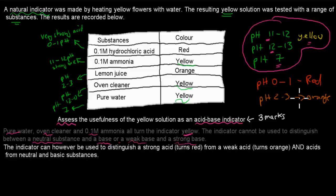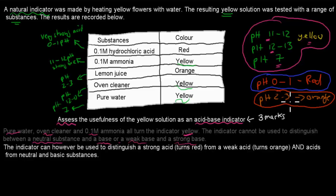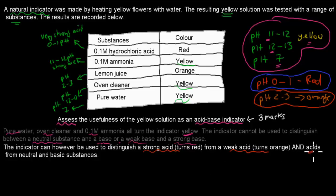The second part concerns the acids. The indicator can, however, be used to distinguish between a strong acid — which turns red — and a weak acid — which turns orange. It can also be used to distinguish acids from neutral and basic substances, since acids give red or orange while neutral and basic substances all give yellow. We can tell if something is an acid, but we can't distinguish between neutral and basic.